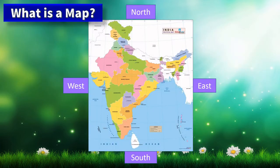Now let us see what is a map. A diagram of an area is called a map. This is our India map. It tells us that Jammu Kashmir is in the North and Tamil Nadu is in the South.